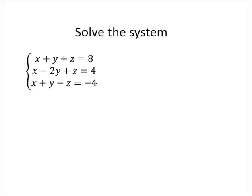Solve the system: x plus y plus z is 8, x minus 2y plus z is 4, and x plus y minus z is negative 4.